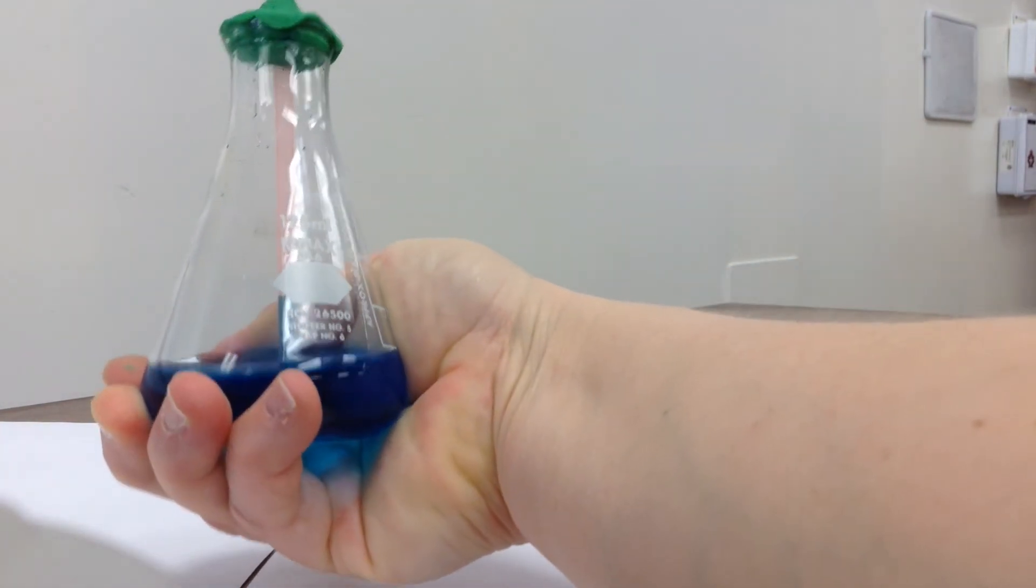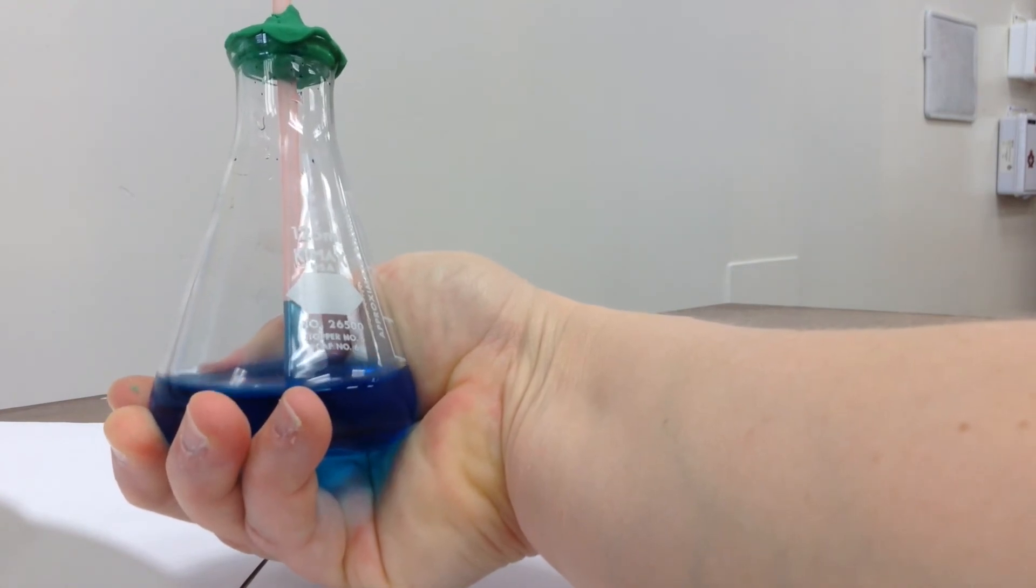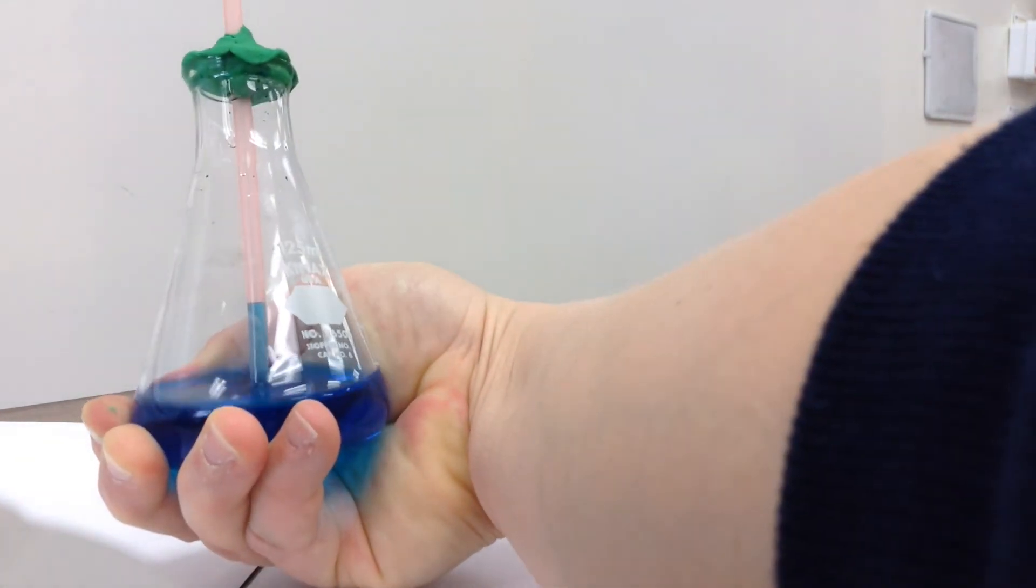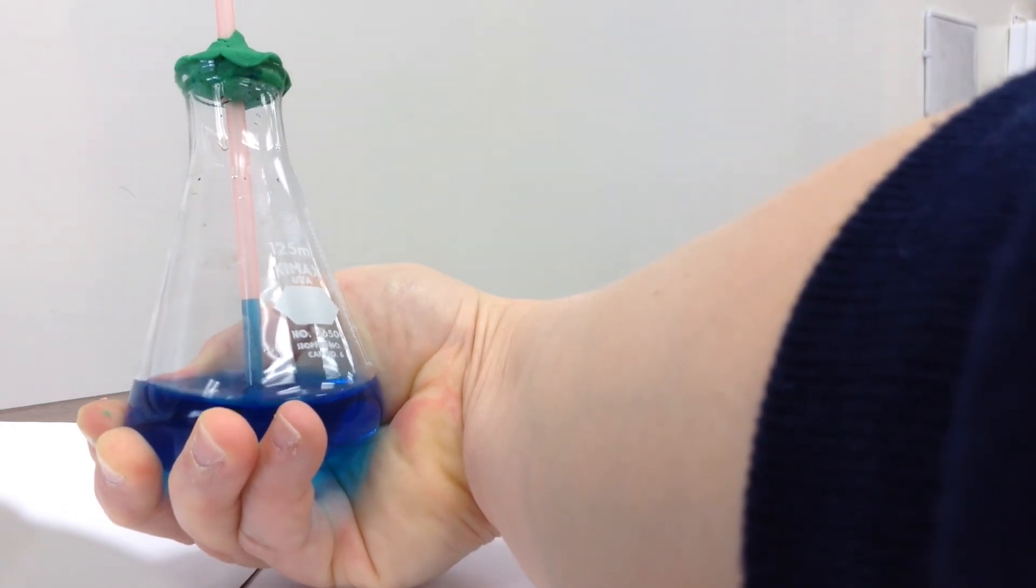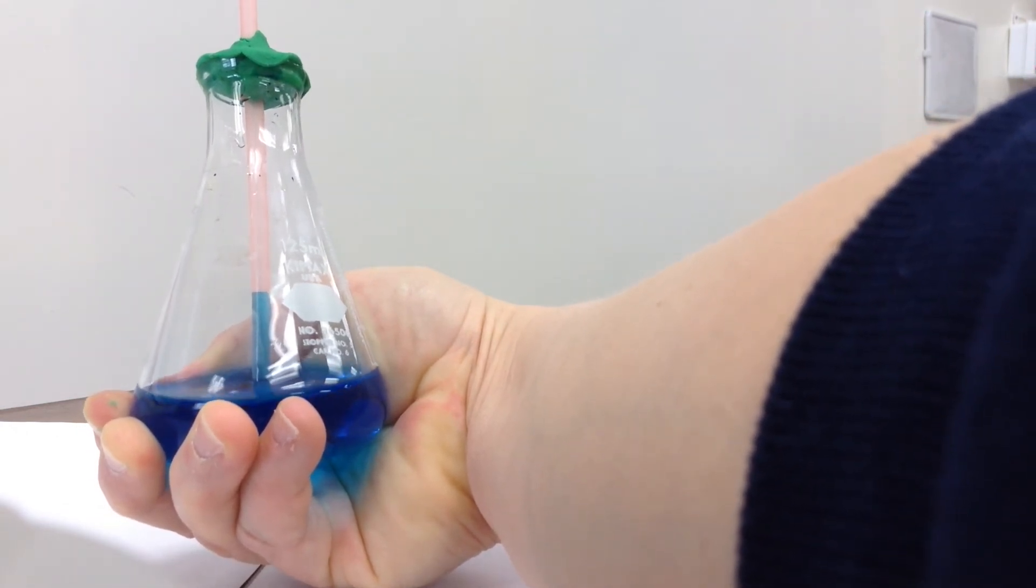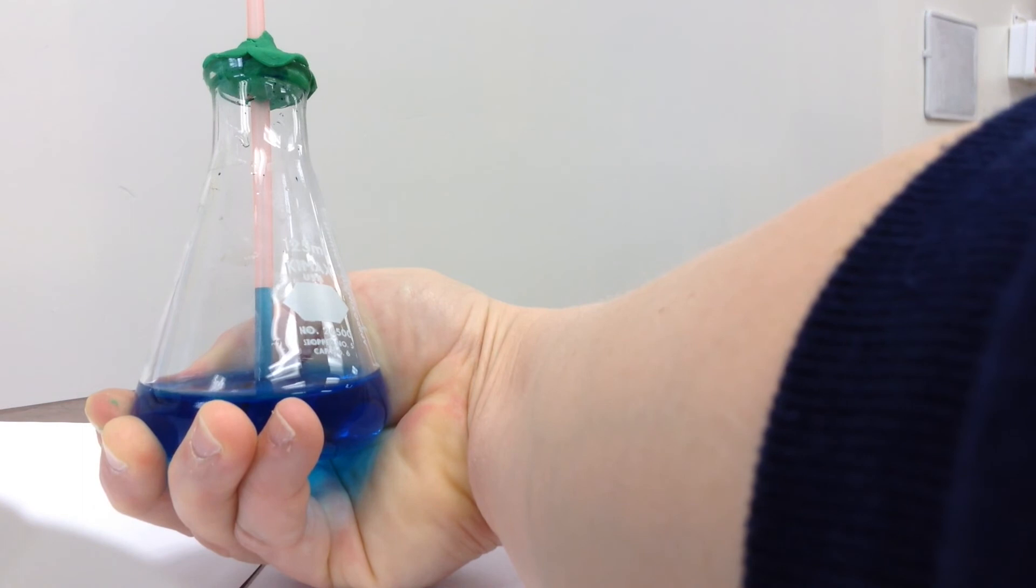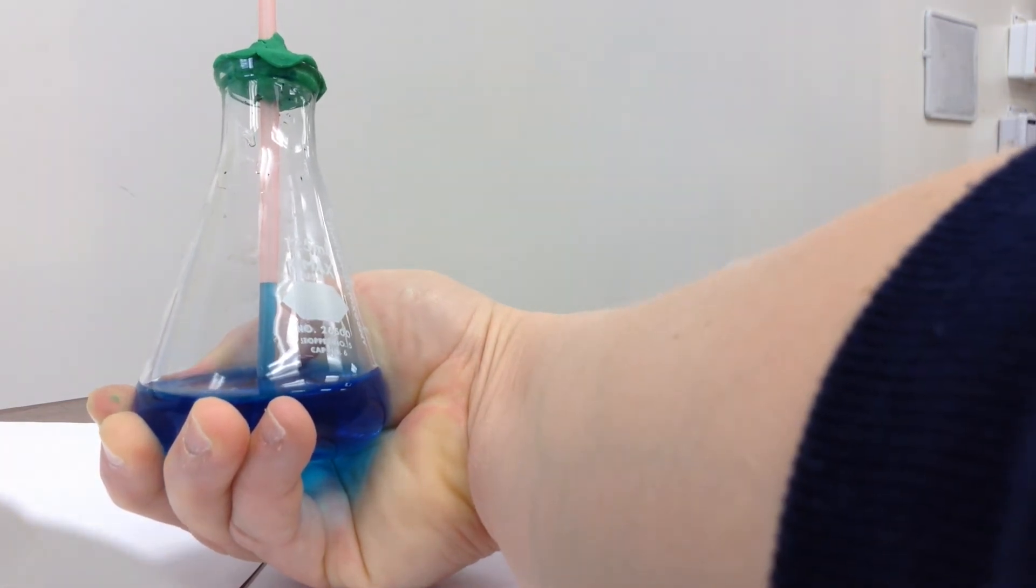And you can see the level of our liquid is moving up the straw. Why is that? What is the heat doing? Why is it moving? What would happen if you put it in cold water?